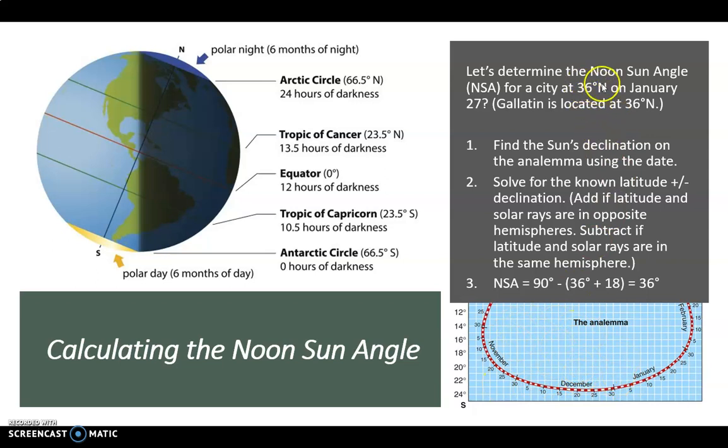It is wintertime here. So we know the sun is shining in the southern hemisphere, and we're in the northern hemisphere. So again, add if you're in the opposite hemisphere. So that's why you see that plus sign there. There's my 18 that we got from finding the 27th. For January 27th. So 36 plus 18 is what? 54. 90 minus 54 gives you 36 degrees.